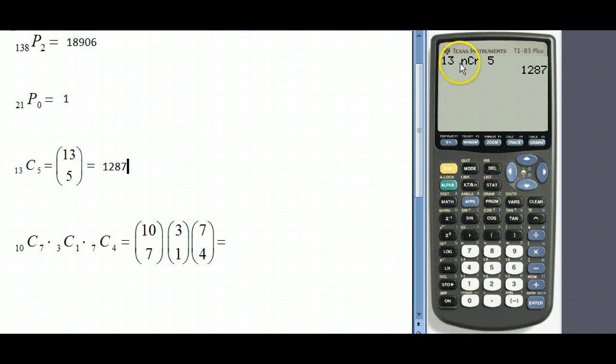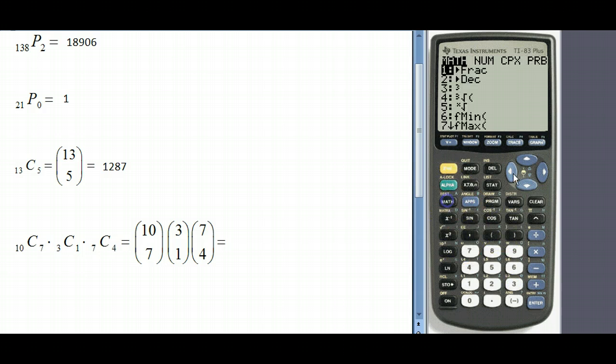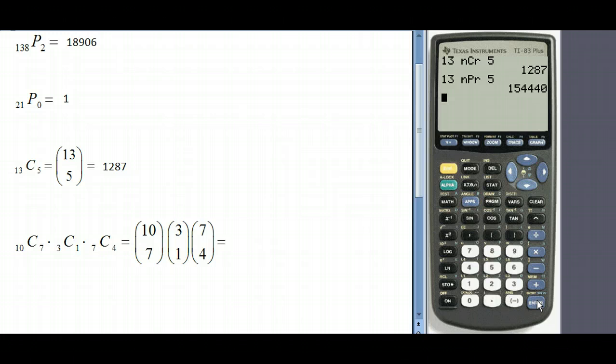Just to show you the difference between the combination and the permutation, I'm going to do the same thing with this but do a permutation so you can see the difference in the numbers. So we'll do 13 again, then math, probability, select option two, then five, and you see that we have way more groups there. This is 154,440 groups and the reason for that is because order matters, whereas if order does not matter there's a lot of groups that are being duplicated.